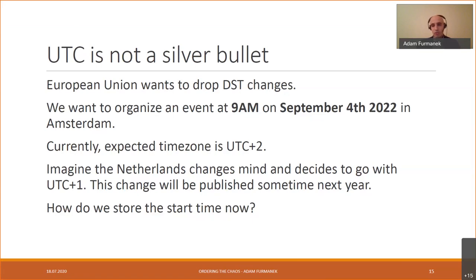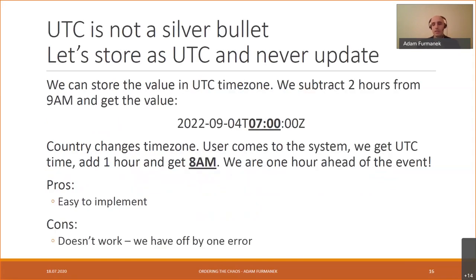Here's a concrete example: suppose we want to organize an event at 10 a.m. in September 2022 in Amsterdam. Currently the expected UTC offset is UTC+2. But we don't know what the Netherlands will decide about DST — they may be at UTC+1 on September 4th, 2022. If we just store the time in UTC as 7 a.m. and then recalculate, we may end up with the wrong time.